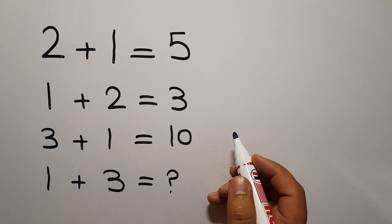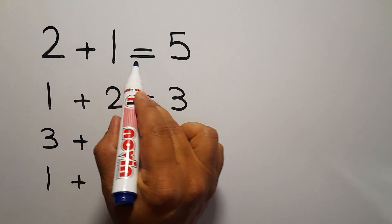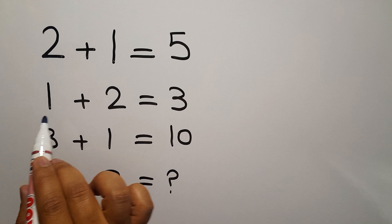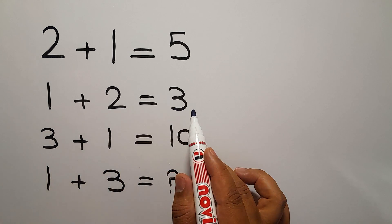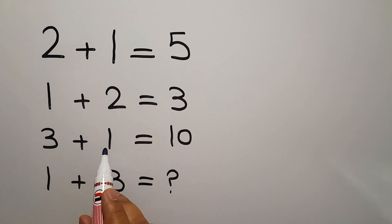Hey guys, welcome to Puzzle Joy. 2 plus 1 equals 5, 1 plus 2 equals 3, 3 plus 1 equals 10, and 1 plus 3 equals question mark. Our goal is to find the pattern that exists here and calculate the missing number. Are you ready to solve?